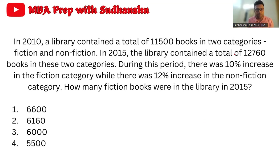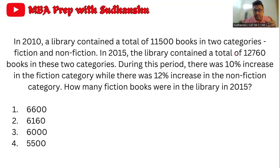First, let's understand the question. This is an actual CAT question you can find online. In 2010, a library contained a total of 11,500 books in two categories: fiction and non-fiction. In 2015, the library contained a total of 12,760 books. During this period there was a 10% increase in fiction and a 12% increase in non-fiction. The overall increase must be a number between 10 and 12, because that's how averages work.